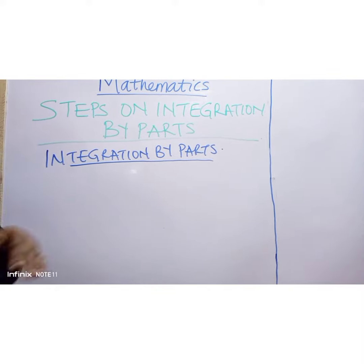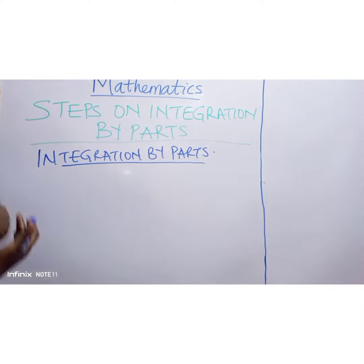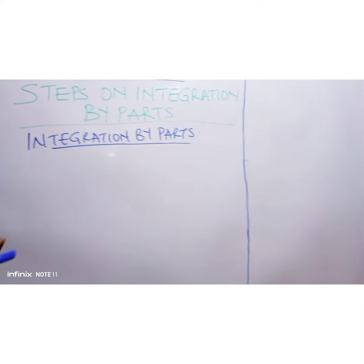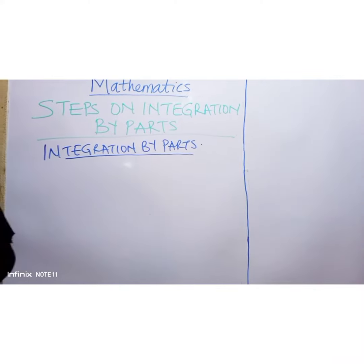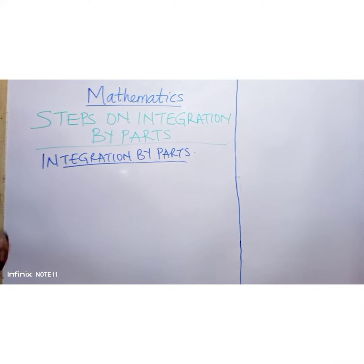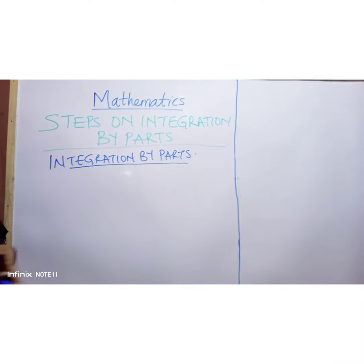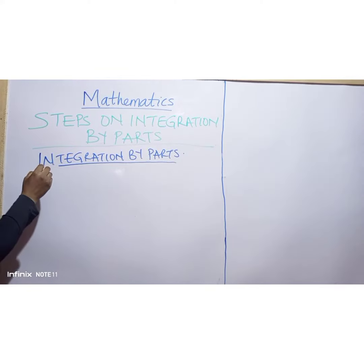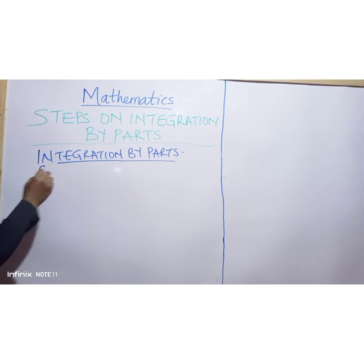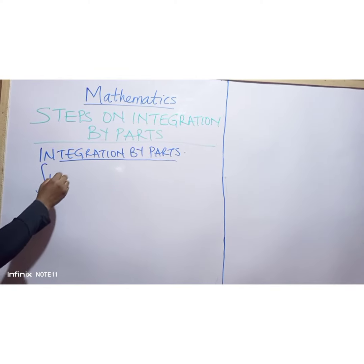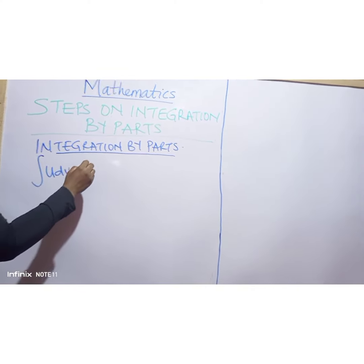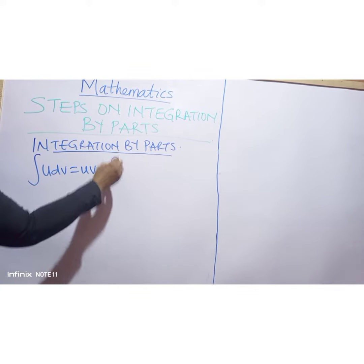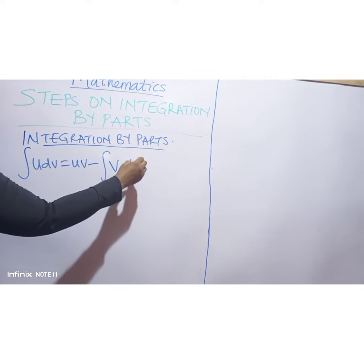We use integration by parts when you are integrating an expression that is in product form. The formula for integration by parts is: the integral of u dv is equal to uv minus the integral of v du.